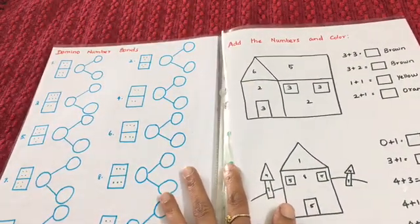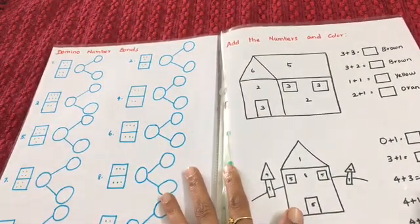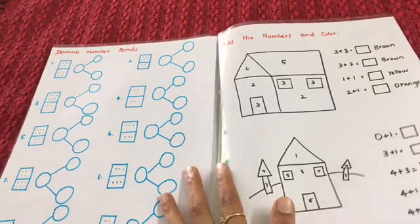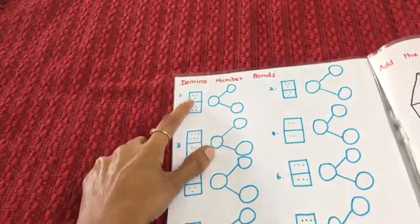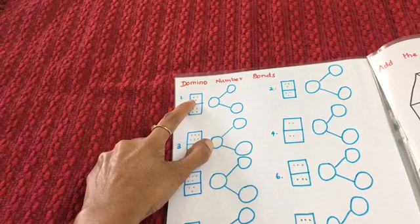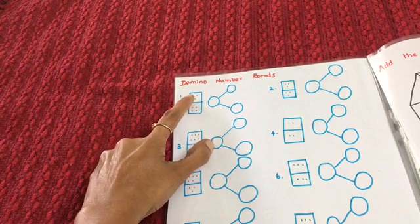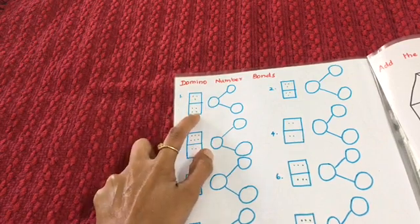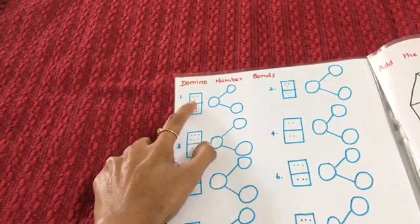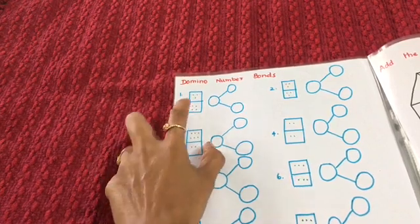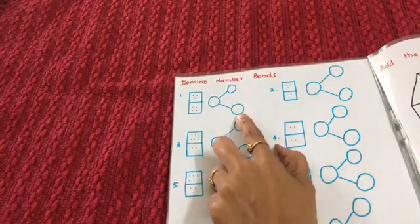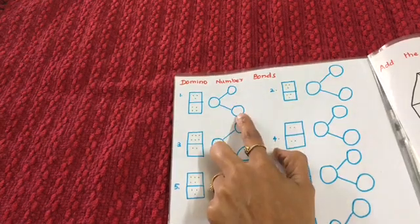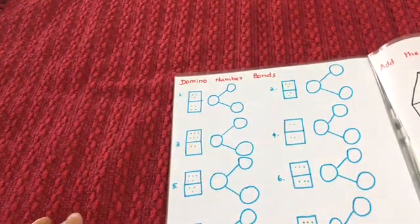Here we have domino number bonds. There are two squares — in the first square I drew three dots, and in the second square I drew four dots. He counts and writes number 3 and number 4, so 3 plus 4 makes 7, and he writes 7.